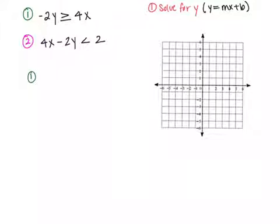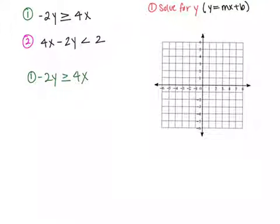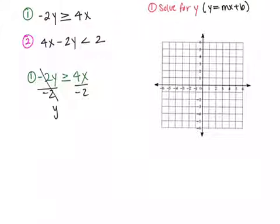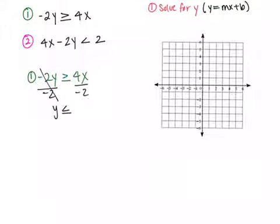So if I rewrite my equation, we have negative 2y is greater than or equal to 4x. To get rid of this negative 2, I have to divide both sides by negative 2. The negative 2s cancel and y drops down. Notice that I divided by a negative 2, so the sign switches — make sure you do that. So we have a sign switch, and 4 divided by negative 2 gives us negative 2x.